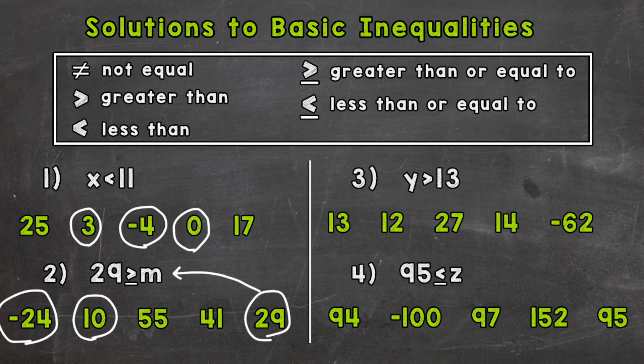On to number 3, we have y is greater than 13. So any number greater than 13 would be a solution for y. Now, if we were to look at 13 for a solution, plug in 13, that would not work. 13 is not greater than 13. We would need a greater than or equal to sign for 13 to work, but we don't for number 3. So 13 is not a solution. 12 isn't either. 12 is not greater than 13. We are looking for any number greater than 13, and that would be a correct solution.